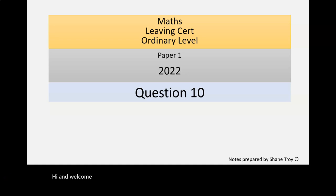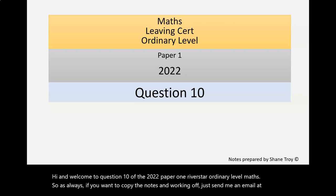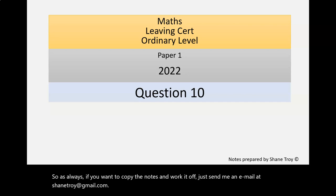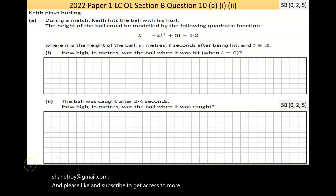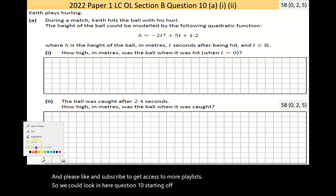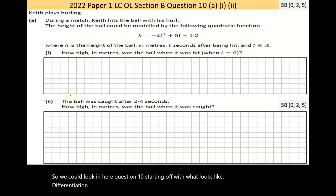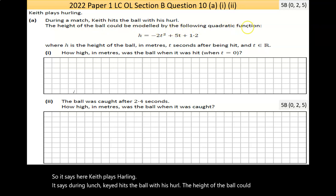Hi, and welcome to question 10 of the 2022 Paper 1 Leaving Cert Ordinary Level Maths. As always, if you want a copy of the notes I'm working off, just send me an email at shanetroy at gmail.com. And please like and subscribe to get access to more playlists. So we'll get stuck in here. Question 10, starting off with what looks like a differentiation question. It says here, Keith plays hurling. During a match, Keith hits the ball with his hurl. The height of the ball could be modeled by the following quadratic function.